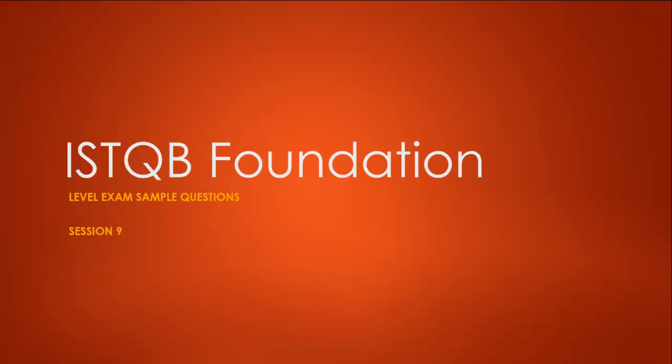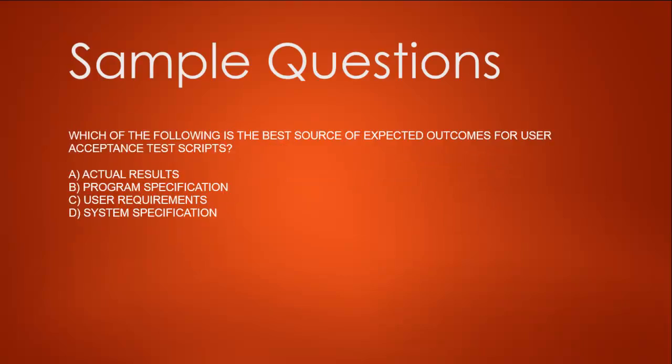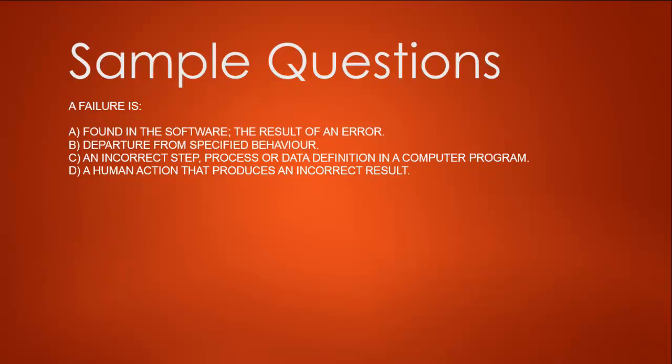Let's take first question. A failure is: option A, found in the software result of an error; B, departure from specified behavior; C, an incorrect step, process or data definition in a computer program; D, a human action that produces an incorrect result.